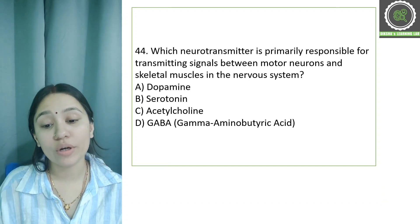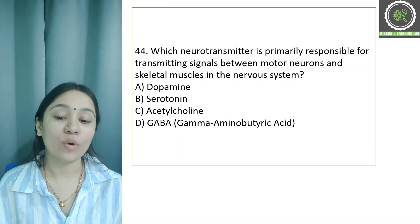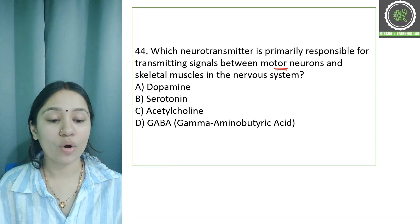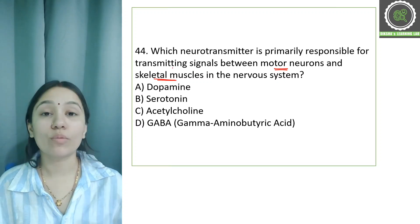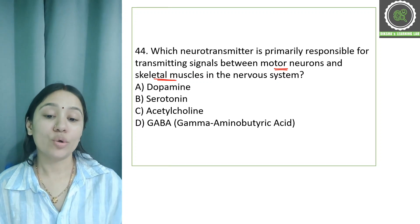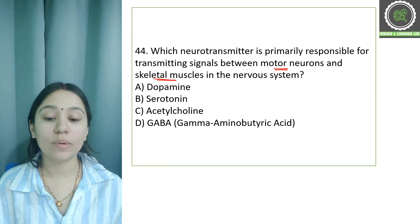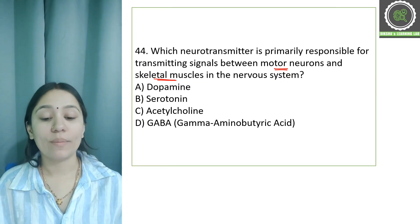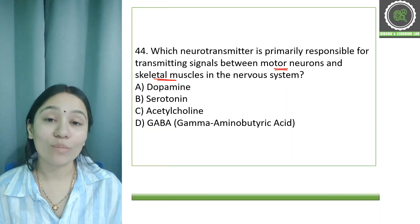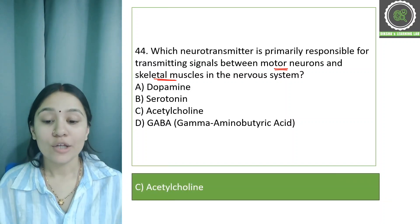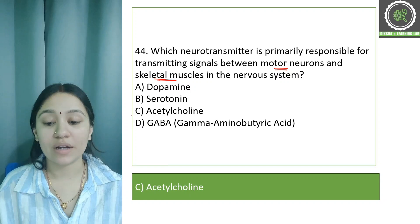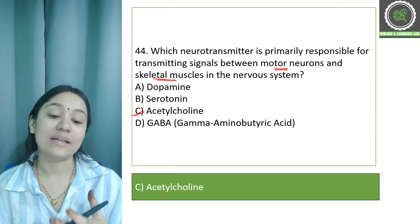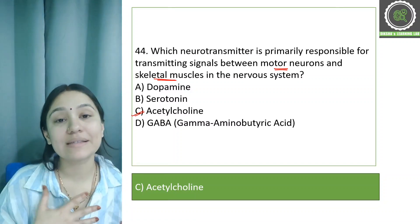Question number 44: Which neurotransmitter is primarily responsible for transmitting signals between motor neurons and skeletal muscles? Options are: A) dopamine, B) serotonin, C) acetylcholine, and D) GABA — gamma-aminobutyric acid. The correct answer is option C, acetylcholine. Acetylcholine is the neurotransmitter responsible for transmitting signals from motor neurons to skeletal muscle neurons.